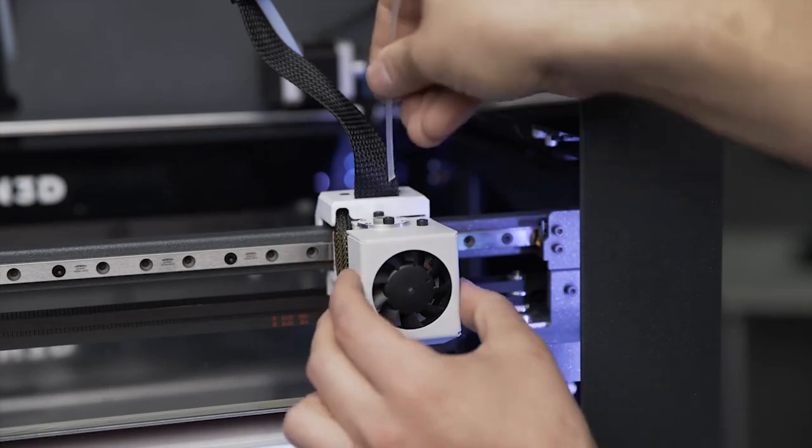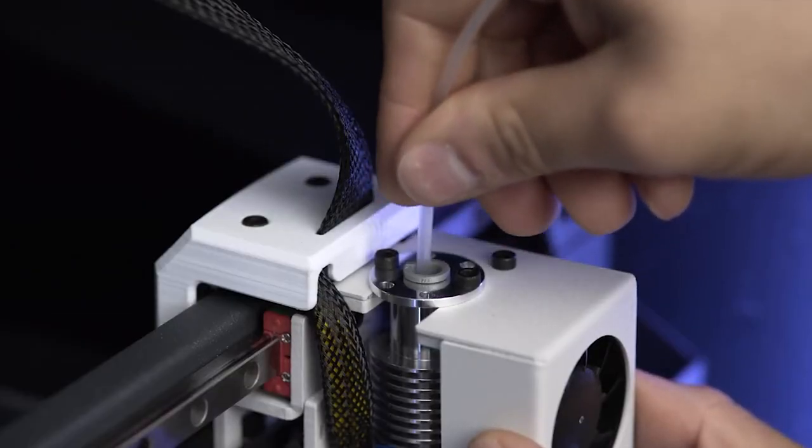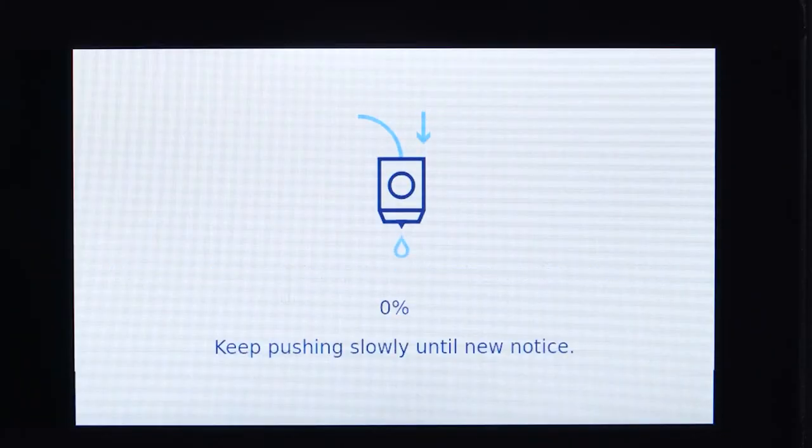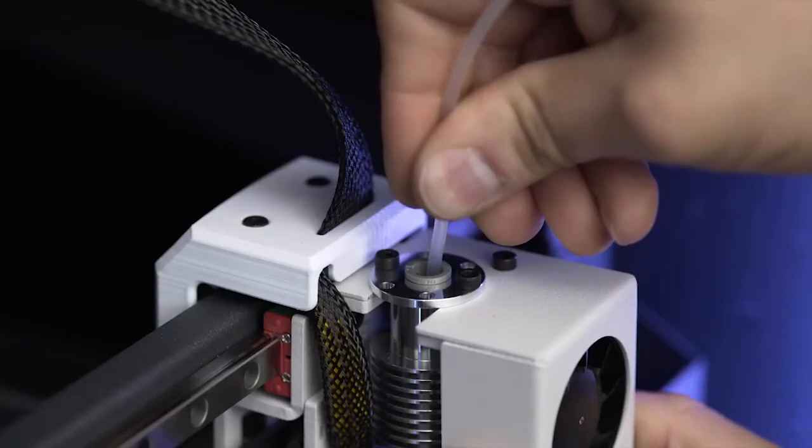Insert the nylon cleaning filament and press down until you see it coming out clean through the nozzle. Press continue and keep slowly applying pressure as the screen indicates.